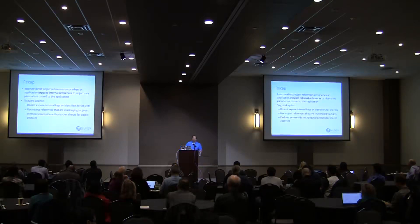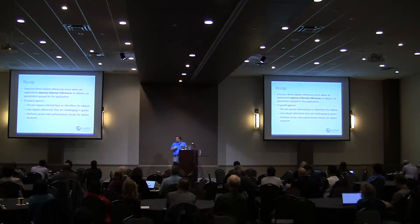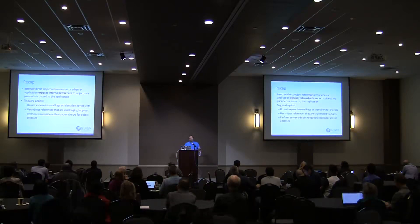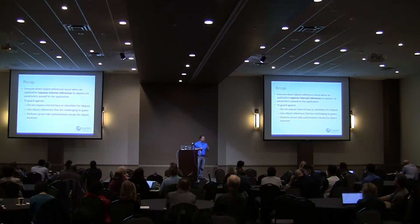The recap: insecure direct object references occur when an application exposes internal references to objects via parameters. By manipulating those parameters, we're able to get data that we're not authorized to access. To prevent this: don't expose internal keys or identifiers; use references that are challenging to guess, like UUIDs; and when performing server-side authorization, make sure users are only capable of accessing those particular objects they're authorized for.